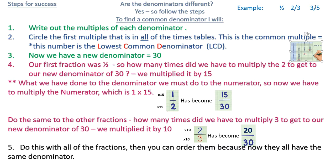Then we've got 3 fifths. So you would carry on how many times did we multiply 5 to get to 30? Well, obviously it was 6. So we have 30 again on the bottom. And we would then have to multiply 3 by 6. So that would be 18. So you'd have 18 thirtieths. So you would then fit that in between the two when you put them in order.